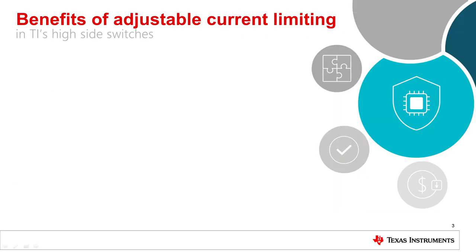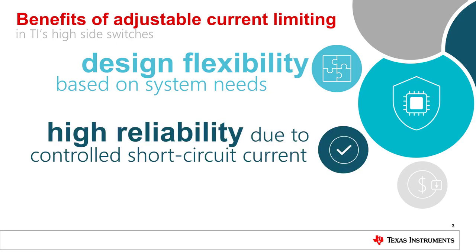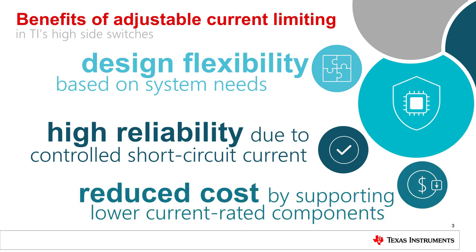The adjustable current limit of TI's Hi-Side switches allows for the flexibility to set a lower current limit level and drive many different kinds of loads with the same device. It also makes the devices highly reliable when it comes to promptly controlling current during short circuit events. Using a Hi-Side switch helps to reduce system cost by supporting much lower ratings from surrounding components like diodes and inductors.